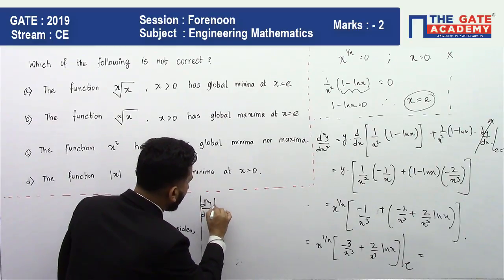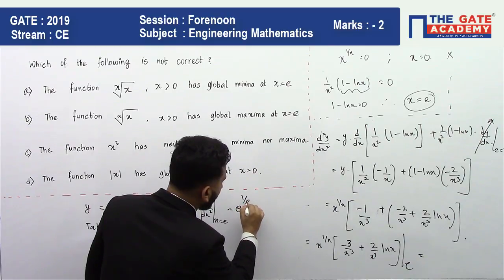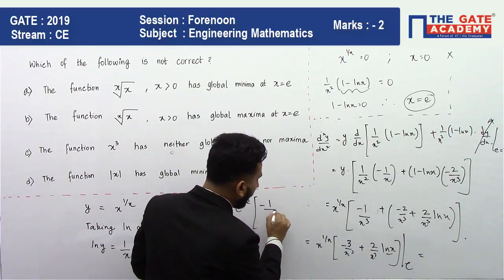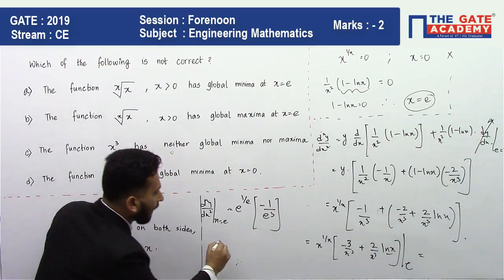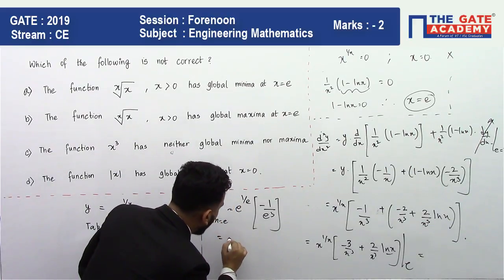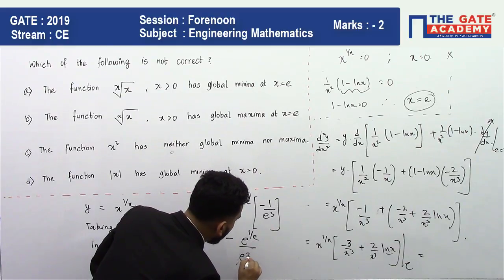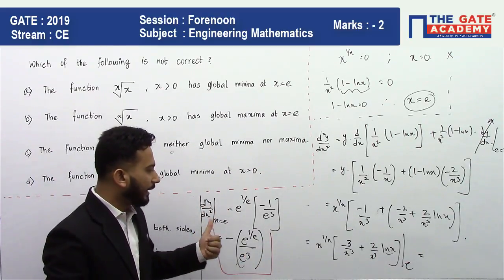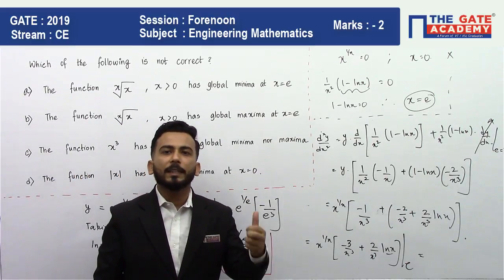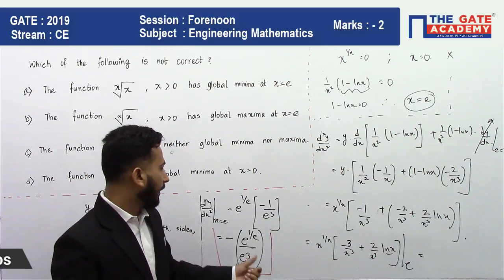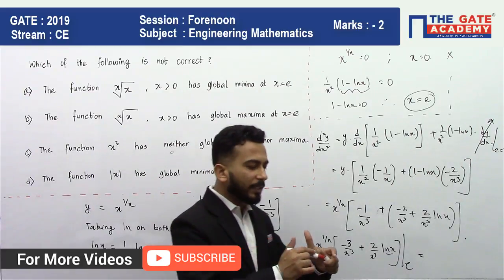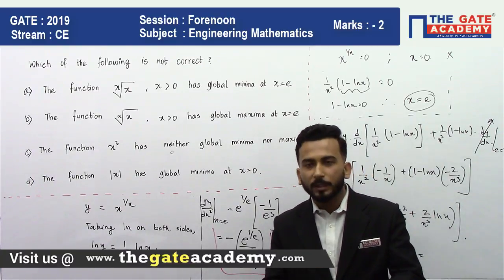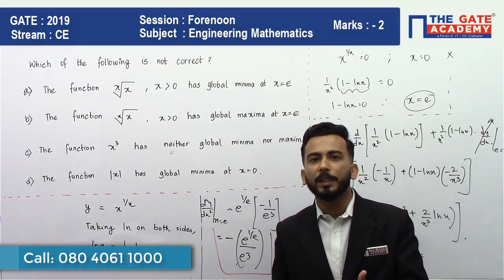Substituting x = e: d²y/dx² = e^(1/e) · [−3/e³ + (2 ln e)/e³] = e^(1/e) · [−3/e³ + 2/e³] = e^(1/e) · (−1/e³) = −e^(1/e)/e³. Since e^(1/e) and e³ are both positive, d²y/dx² at x = e is negative, i.e., less than zero.